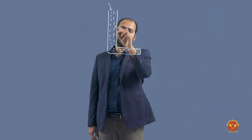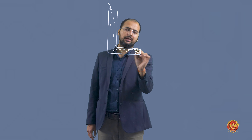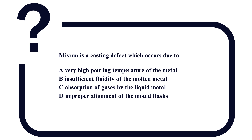Misrun molten metal की insufficient fluidity के कारण होता है। अगर fluidity अच्छी नहीं है, तो metal extreme ends तक पहुँचने के पहले ही solidify हो जाता है। इसलिए इस question में option B — insufficient fluidity of the molten metal — correct answer है।